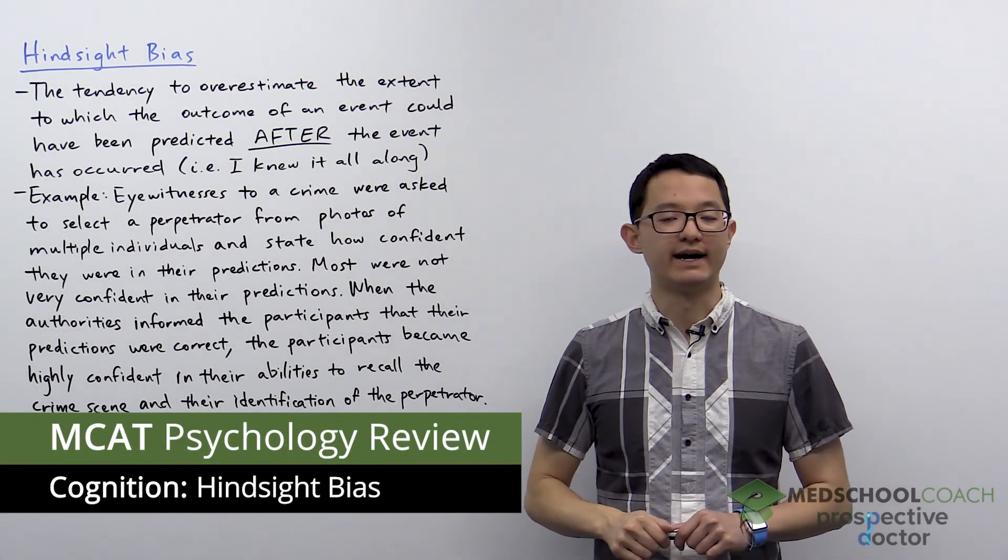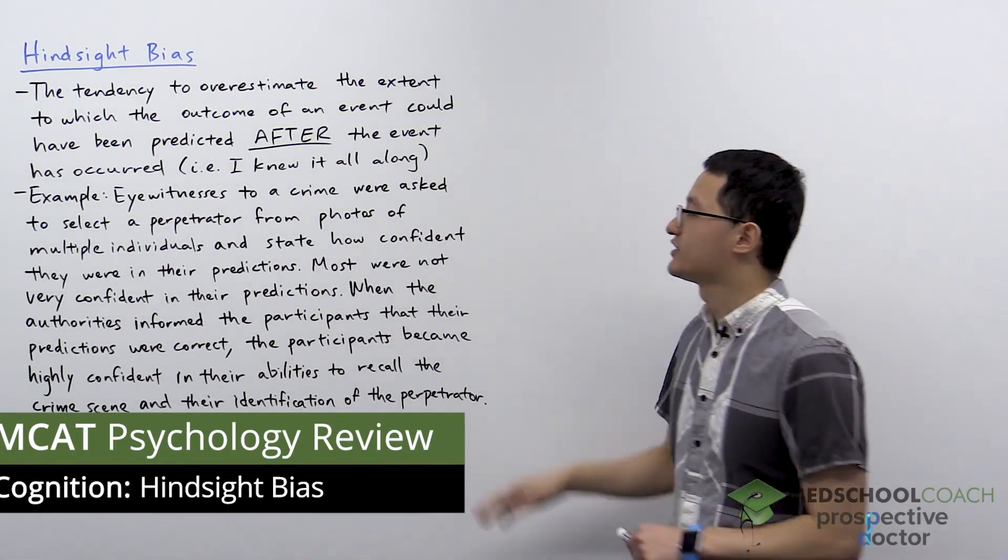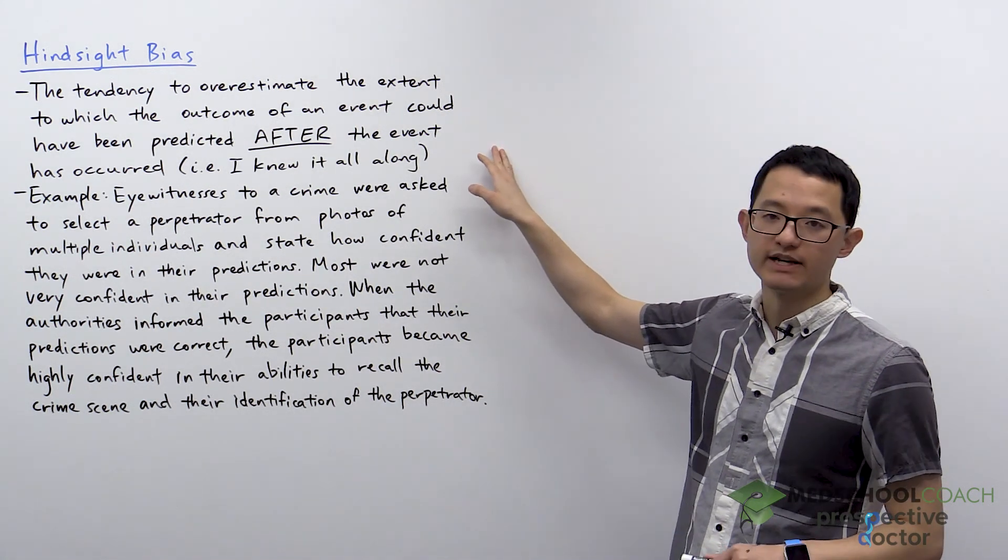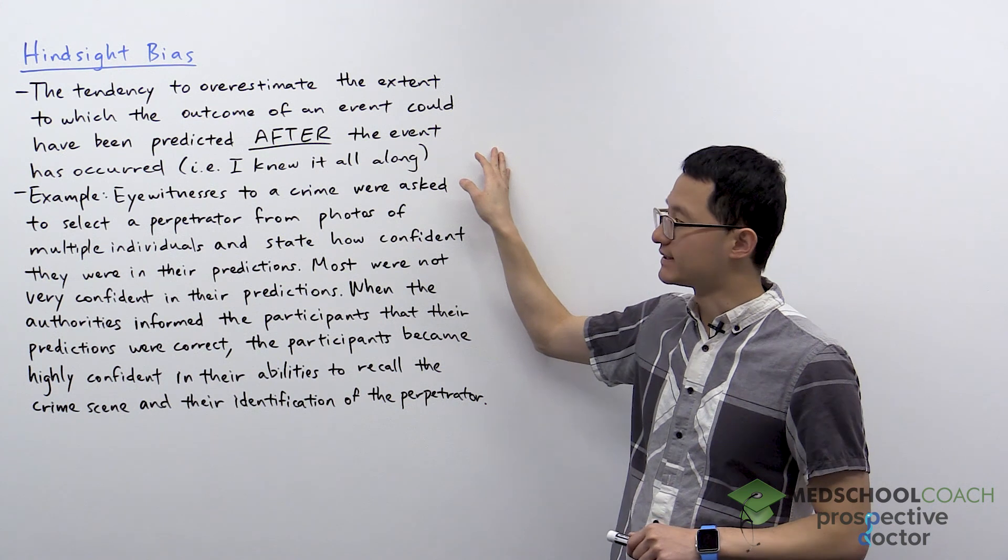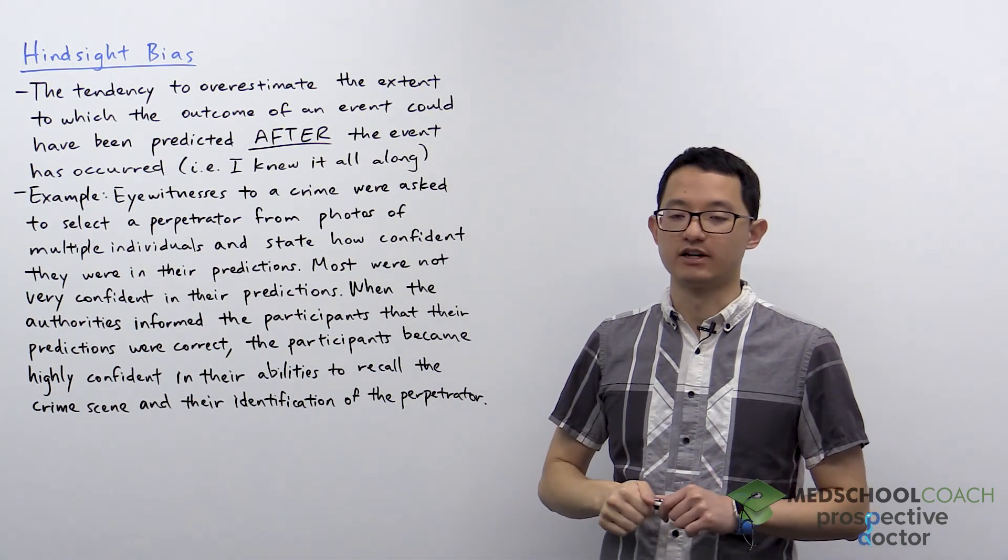In this video we're going to go over hindsight bias. Hindsight bias is the tendency to overestimate the extent to which the outcome of an event could have been predicted after the event has occurred.